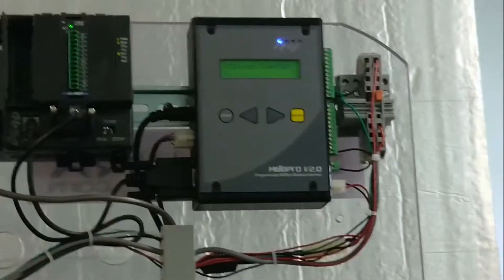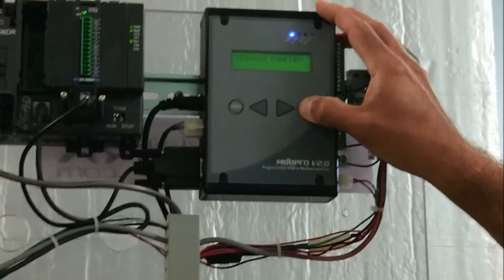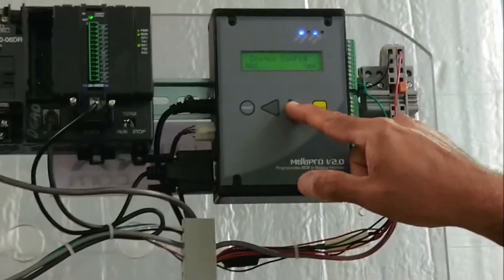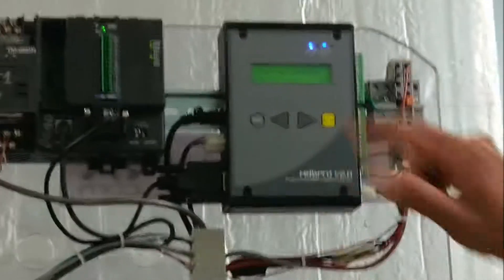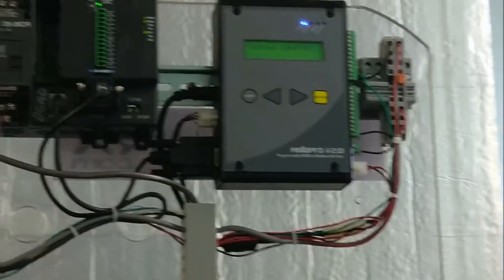CoinCo config will configure a CoinCo Vantage bill acceptor as a secondary, and so I'm going to enter CoinCo config. The default option is no. I'm going to move it over to yes by pressing the right arrow. I'm going to press the enter button, and that's it. It's now configured as a secondary.